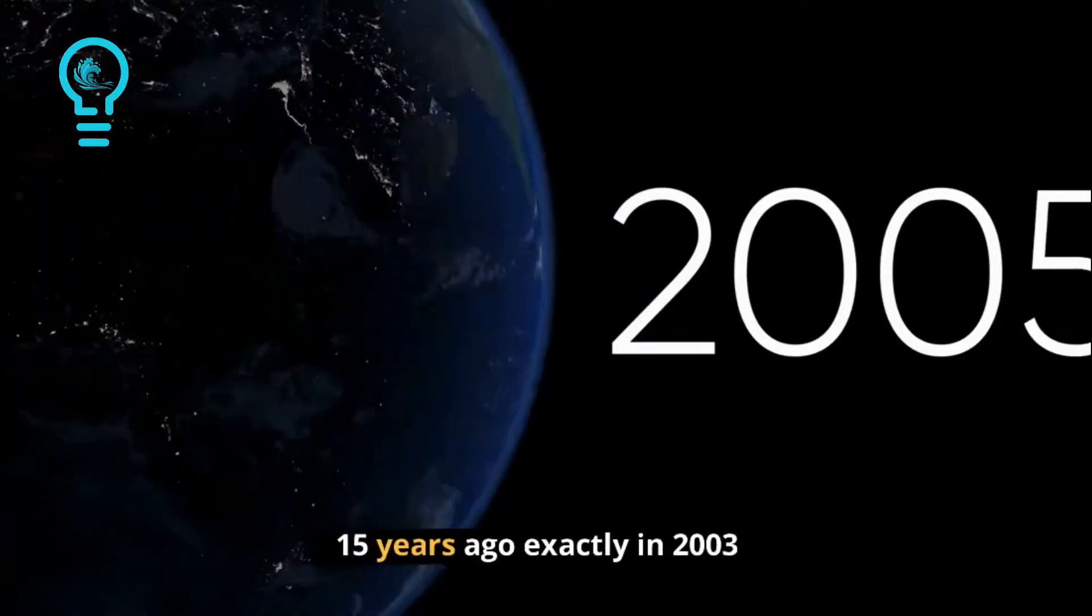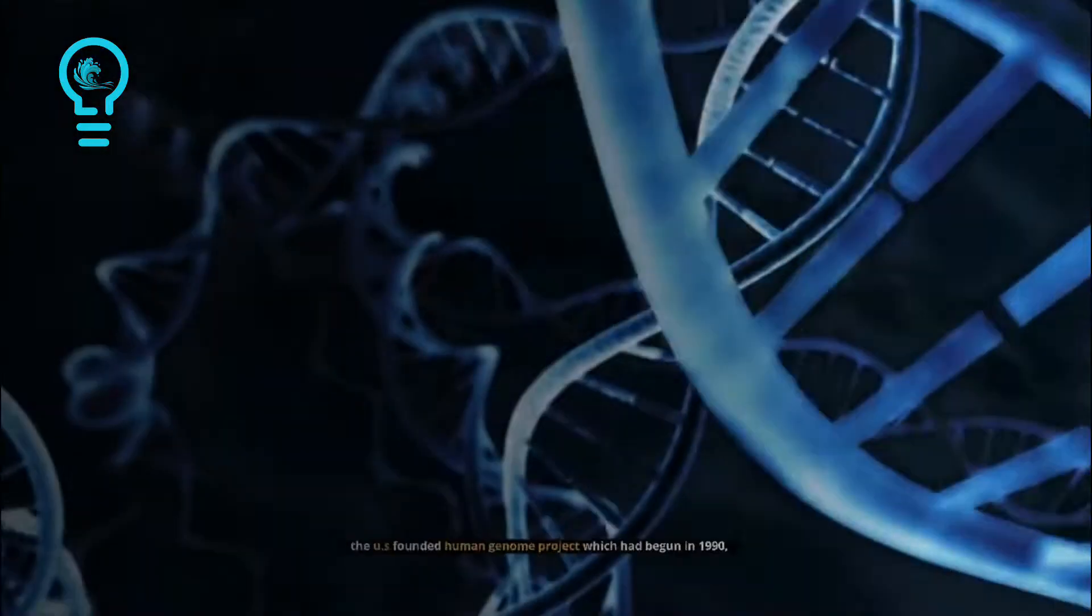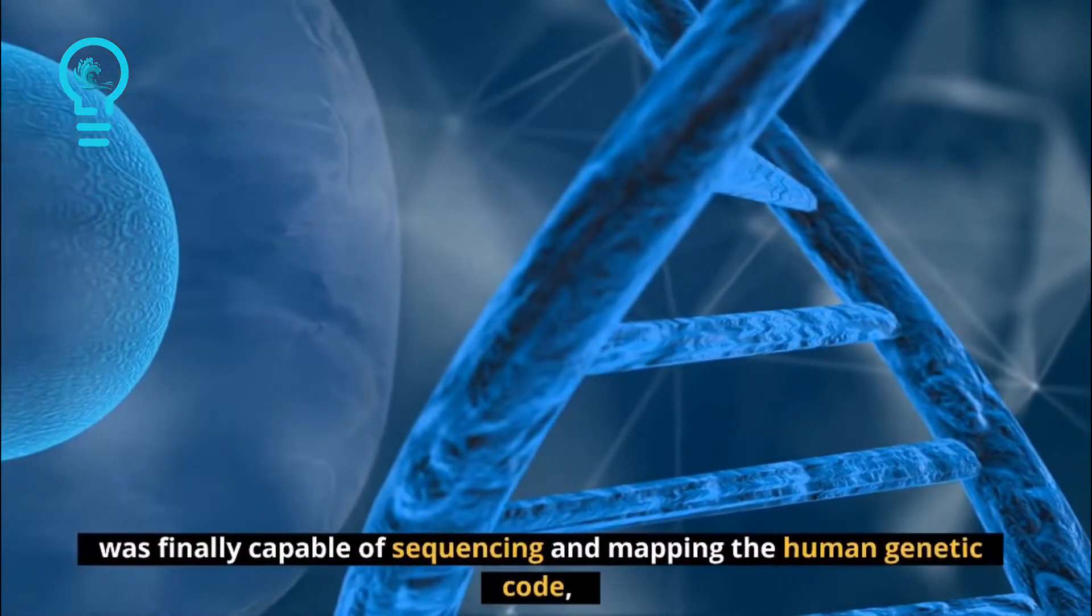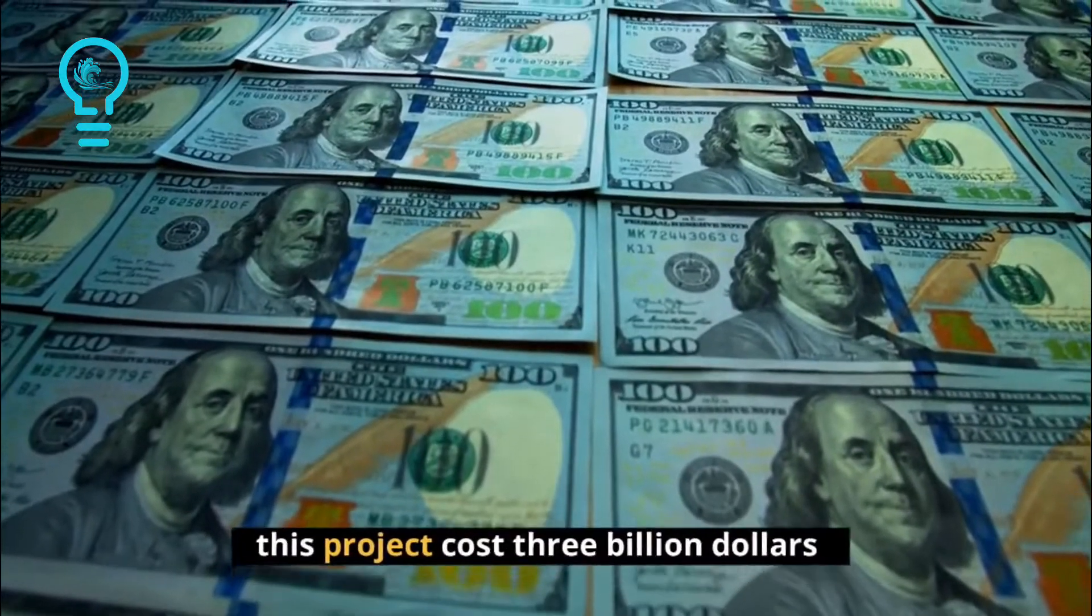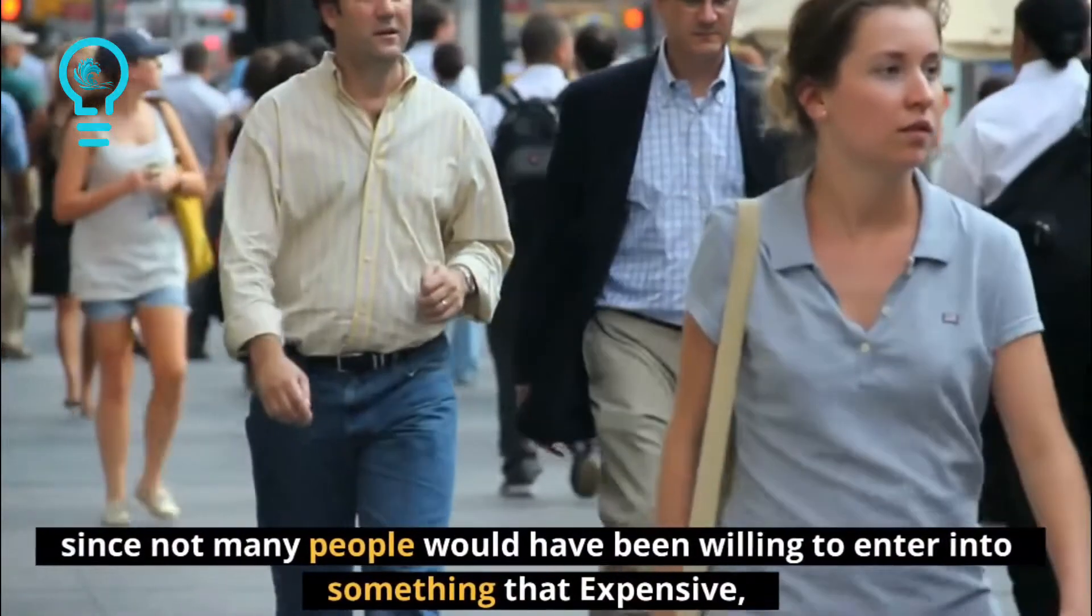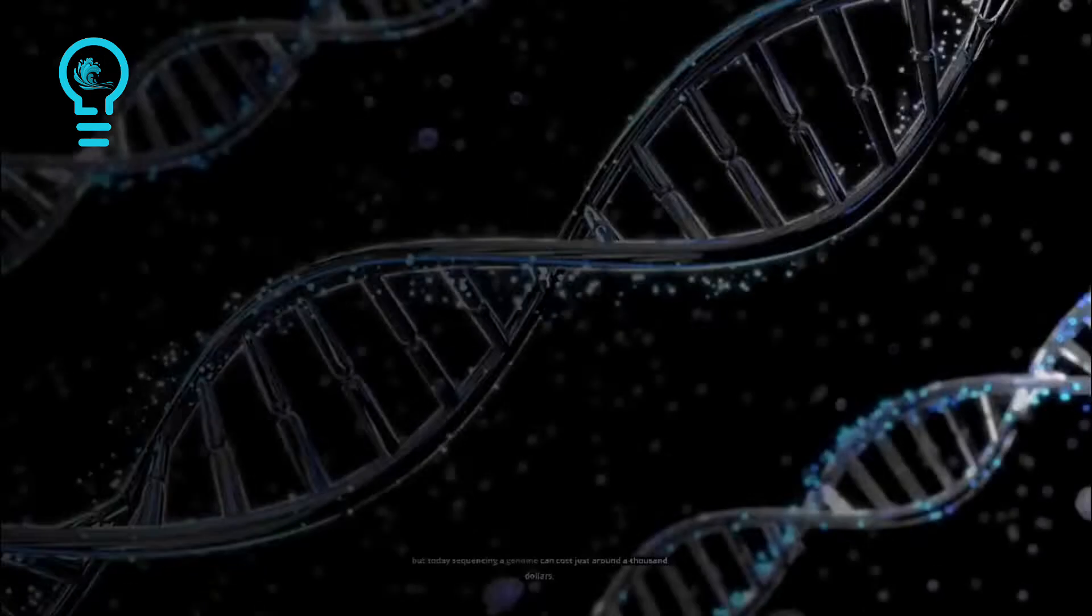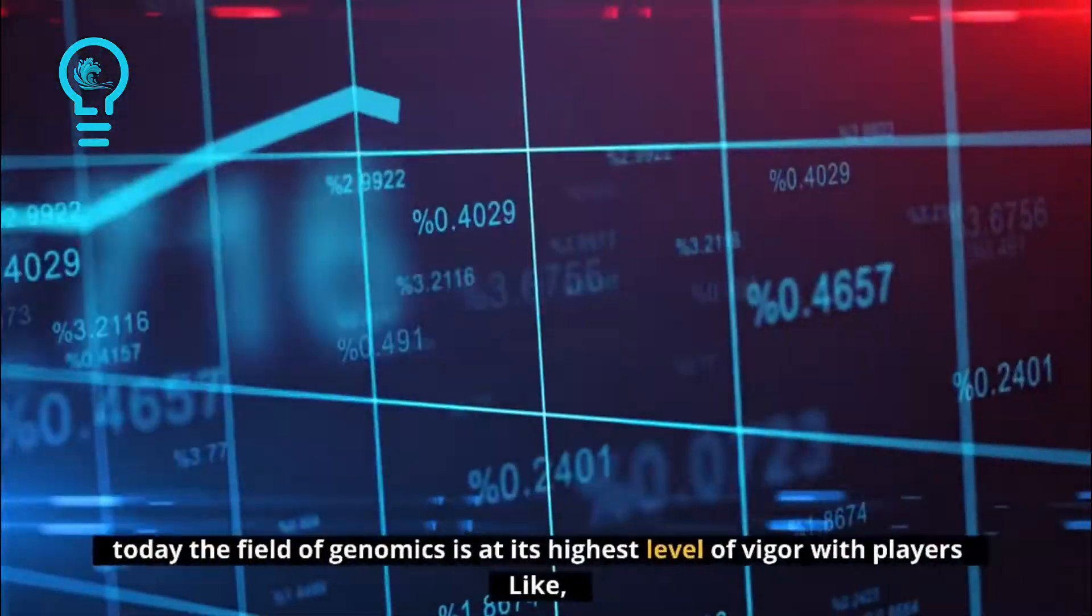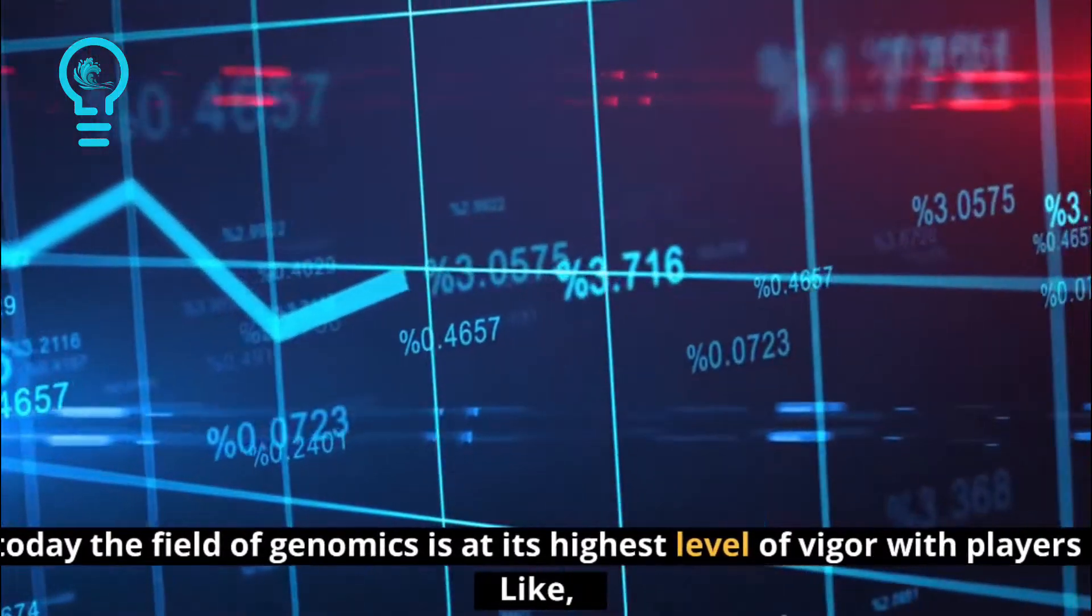Number 4, Genomics. 15 years ago, exactly in 2003, the US founded Human Genome Project which had begun in 1990, was finally capable of sequencing and mapping the human genetic code. This project cost 3 billion dollars. If things had stayed at that cost the industry wouldn't carry much hope, since not many people would have been willing to enter into something that expensive. But today sequencing a genome can cost just around a thousand dollars. Today the field of genomics is at its highest level of vigor with players like Bill Gates and Google.